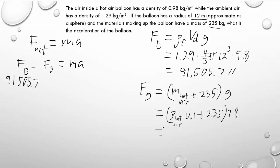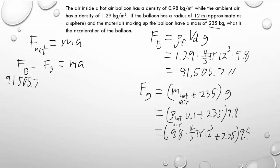The density of the hot air is 0.98, and the volume of the balloon is 4/3 π times 12 cubed, plus the 235 kilograms, all times 9.8. Throwing that whole thing into the calculator gives us 71,819 newtons. That's good news — it's less than our buoyant force of 91,000 newtons, so the balloon will float and accelerate upward. We now have buoyant force minus gravitational force: 91,505.7 minus 71,819.